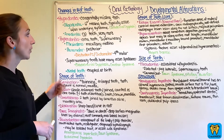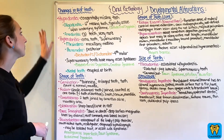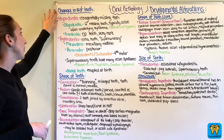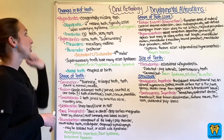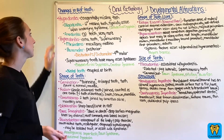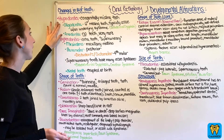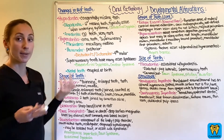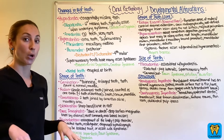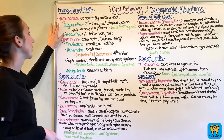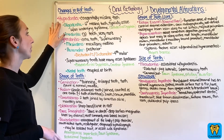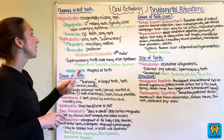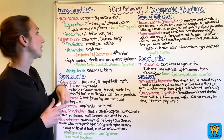Number one, if we're referring to the changes in the number of teeth, we have hypodontia. Hypo meaning low, so we're going to have a lower number of teeth. Those teeth might be congenitally missing.